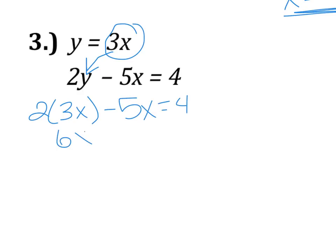So we're going to multiply them together, 6X minus 5X equals 4. If we combine like terms, we get X equals 4.